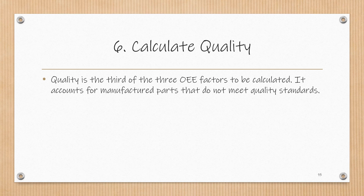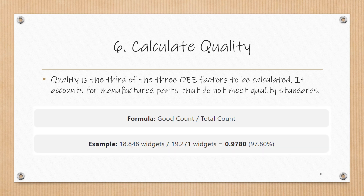Quality is the third of the three OEE factors to be calculated. It accounts for manufactured parts that do not meet quality standards. Quality is calculated by dividing good count by total count. In our example, the good count of 18,848 is divided by the total count of 19,271 for a quality value of 97.80%.